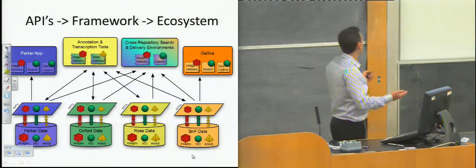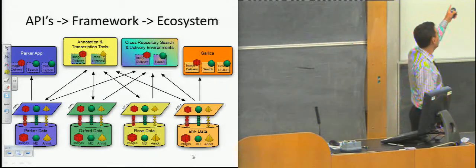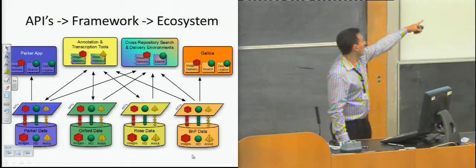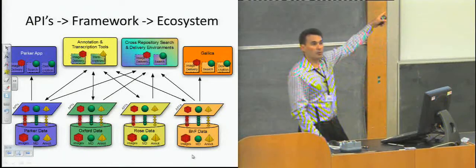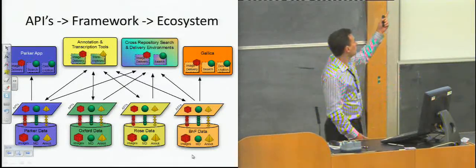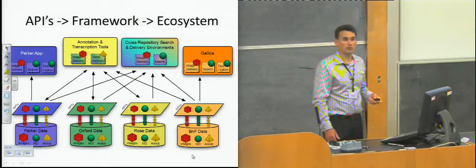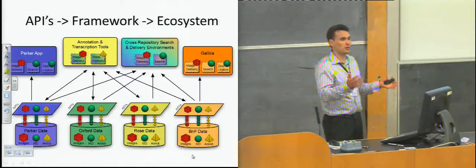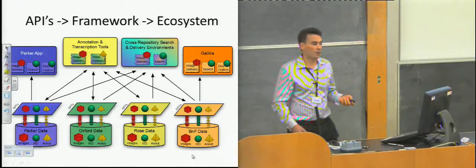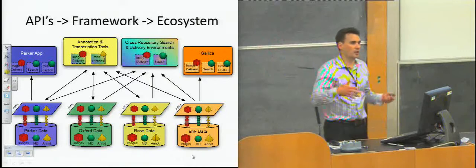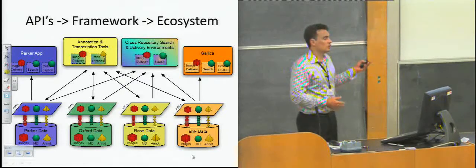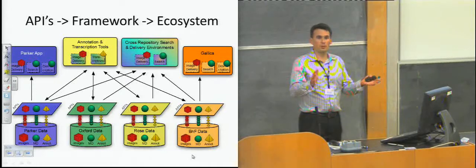If you go beyond a single silo and say not only is Parker doing that, but if Oxford and Rose and the BNF all do that, we begin to see an ecosystem. So we can serve Parker and the BNF can serve Gallica, but then you can have scholars who have their own customized annotation and transcription environments, or you can start to do cross-repository search and discovery environments. I want Anglo-Saxon manuscripts from all over the world or any participating repository. People could collate all of those things together and present them in context — you wouldn't have to go back out to the source repositories to actually view the content.